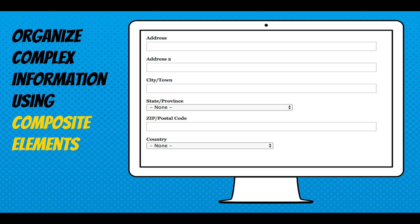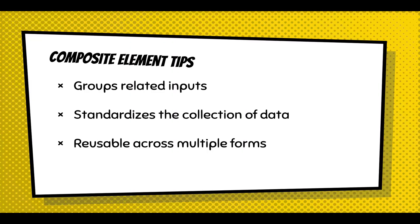You can organize complex information using composite elements. This address composite element is just a group of elements working together, and it standardizes the collection of data. It's powerful for an organization — this is what we define an address to be, across all our forms. You can define the fields, descriptions, and whether to capitalize 'ZIP' or 'zip code.' It's reusable across multiple forms.